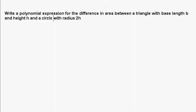Okay, so what we're going to do here is write a polynomial expression for the difference in area between a triangle whose base length is b and whose height is h and a circle with a radius of 2h. So here we're writing a polynomial expression for the difference.